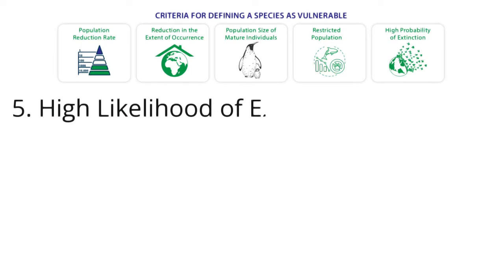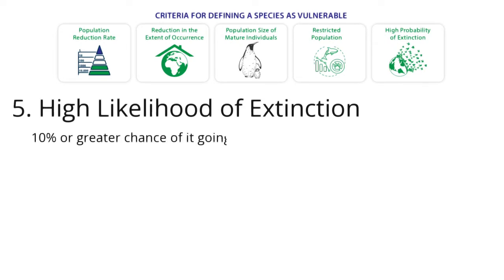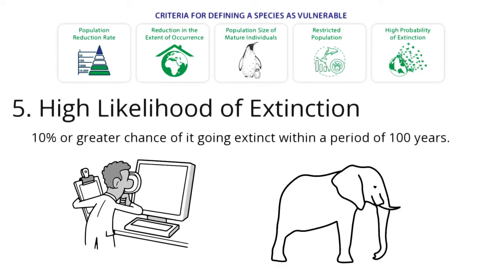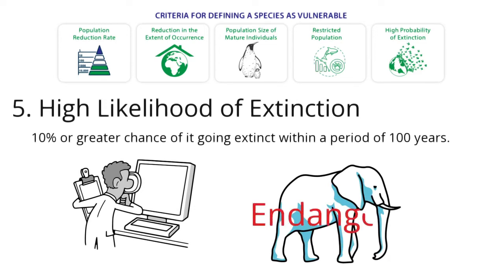5. High Likelihood of Extinction. A species is vulnerable if there is a 10% or greater chance of it going extinct within a period of 100 years. Scientific research is the only way to know the extinction rate of a species. If vulnerable species are not helped, they are likely to become endangered. Endangered species are more likely to go extinct than vulnerable species.